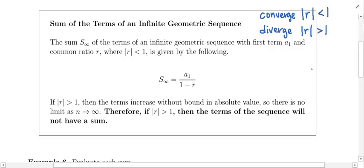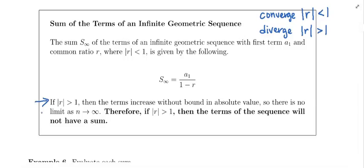On the flip side, if you are dealing with divergence, that will happen if the absolute value of R is greater than 1. If the absolute value of R is greater than 1, then the terms increase without bound in absolute value. So there is no limit as N approaches infinity. Therefore, if the absolute value of R is greater than 1, then the terms of the sequence will not have a sum.